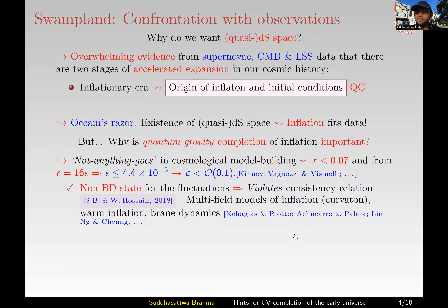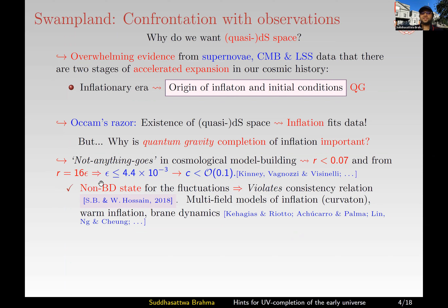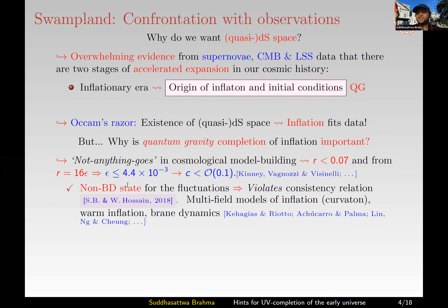Audience: Non-Bunch-Davies vacuum states will also lead to significant back reaction at early times. That's correct. You have to choose the non-Bunch-Davies state such that you choose some k cutoff or some exponential of minus k-squared over lambda for these models, so that back reaction constraints are always satisfied.